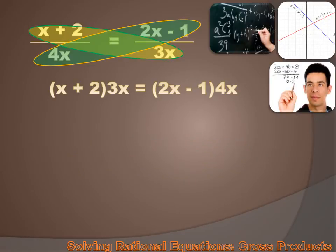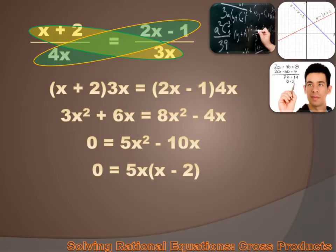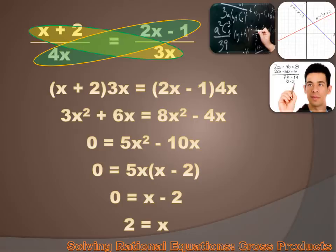Then we take the denominator of the first side and multiply it times the numerator of the second side, and we set those two products equal. In this case, we have x plus 2 times 3x equals 2x minus 1 times 4x. If we just do the math and simplify this, we get x minus 2 equals 0, or x equals 2. All we have to do is use cross products and then simplify the numbers, and we can solve a rational equation.